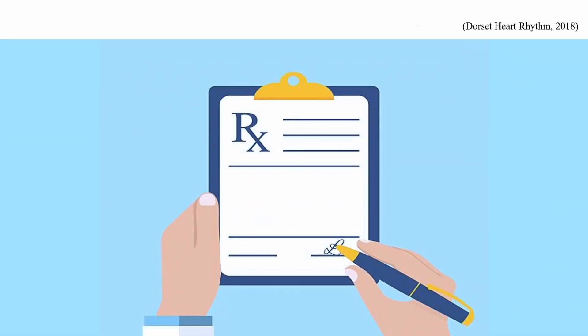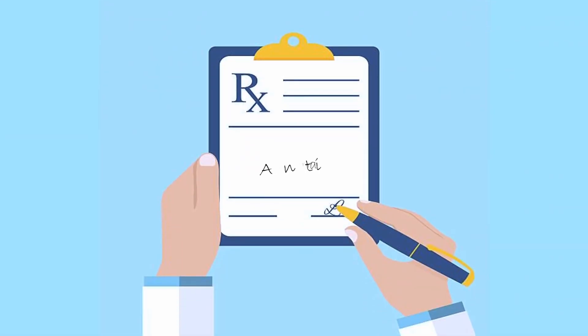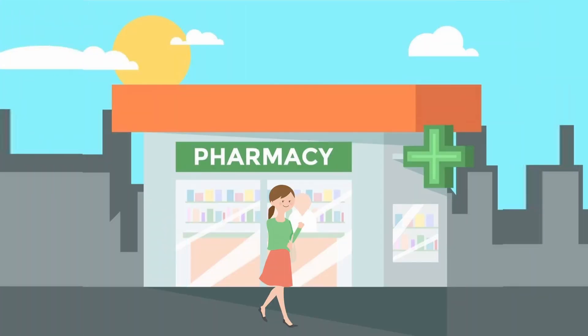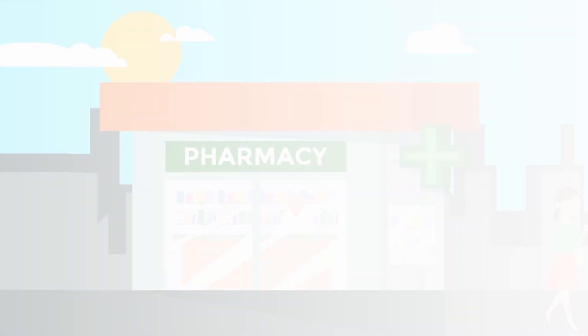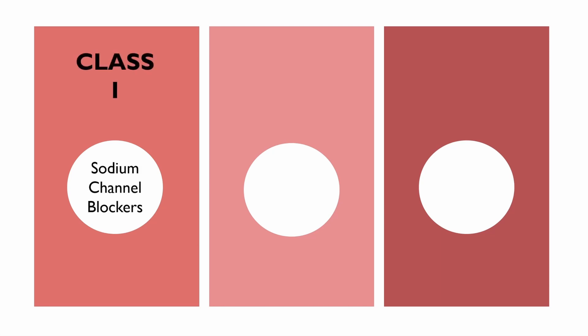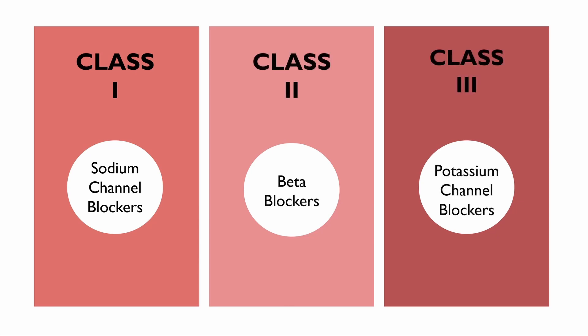Antiarrhythmics are a type of medication that can be used to treat arrhythmias. The type of medication that a patient uses will depend on their condition, and patients will often try multiple different medications to find the one that works best for them. Antiarrhythmic medications can be divided into different classes depending on their mechanisms of action. These include class 1 medications, known as sodium channel blockers; class 2 medications, or beta blockers; and class 3 medications, or potassium channel blockers.